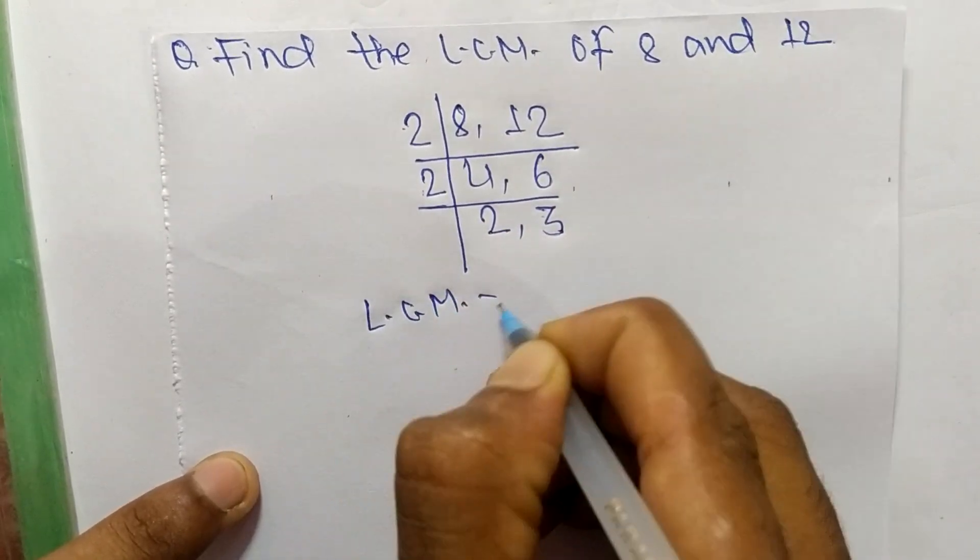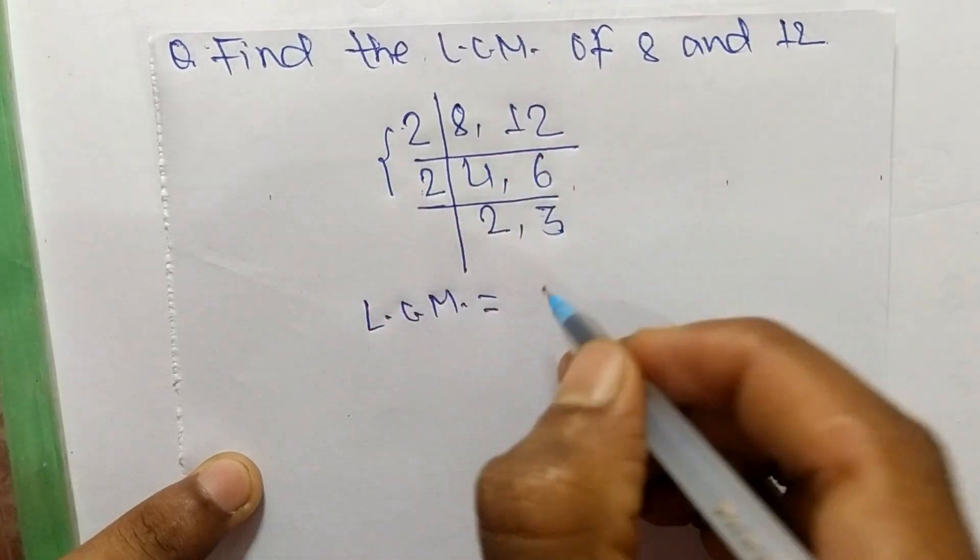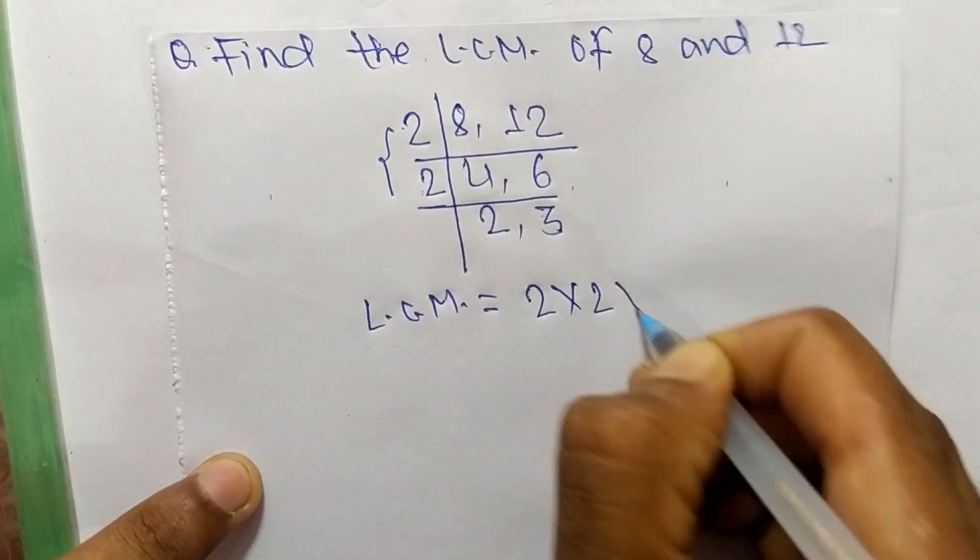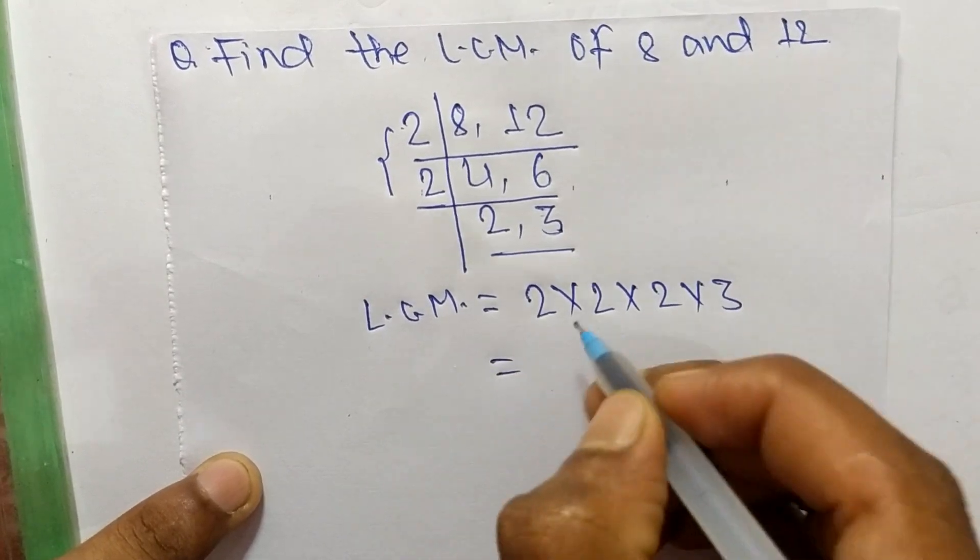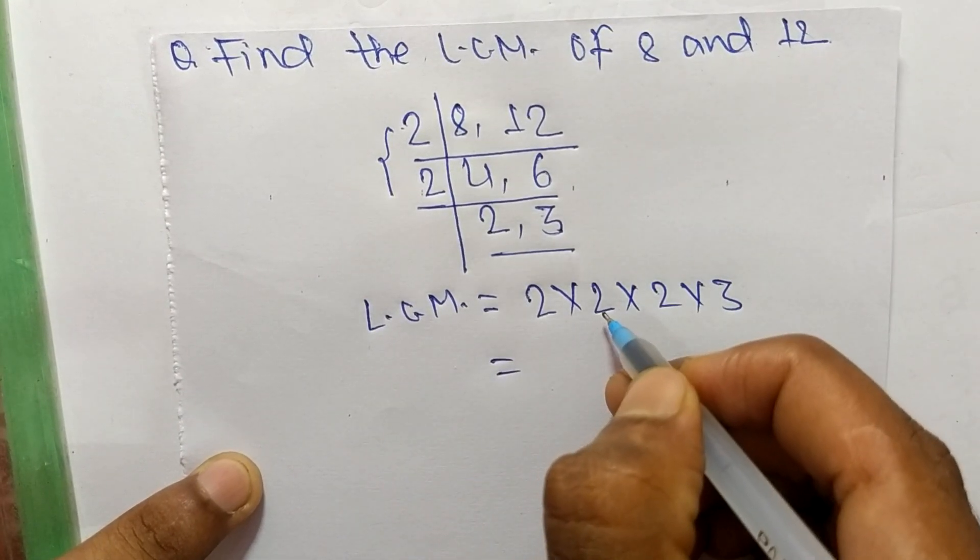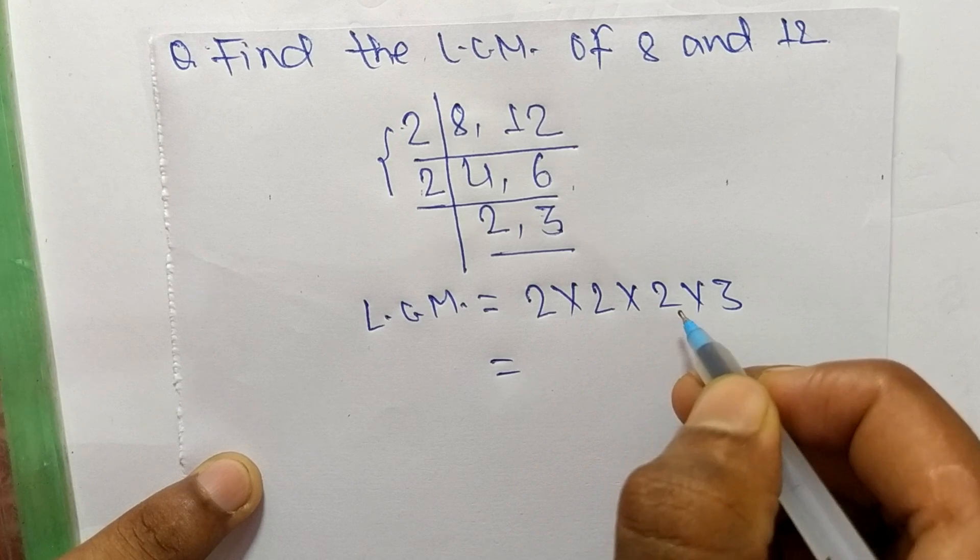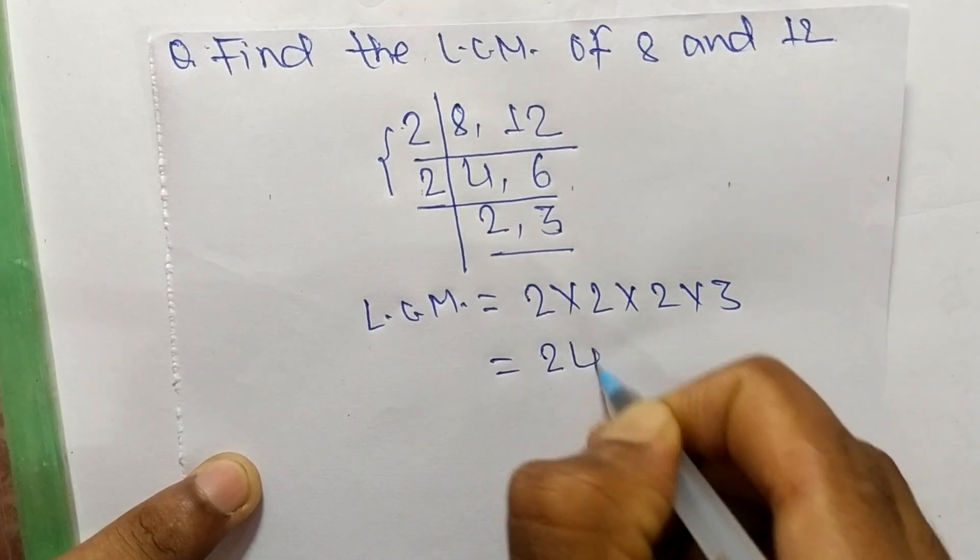So its LCM is equal to, from this part it is 2 times 2, and from this part it is 2 times 3. So 2 times 2 means 4, 4 times 2 means 8, and 8 times 3 means it is 24.